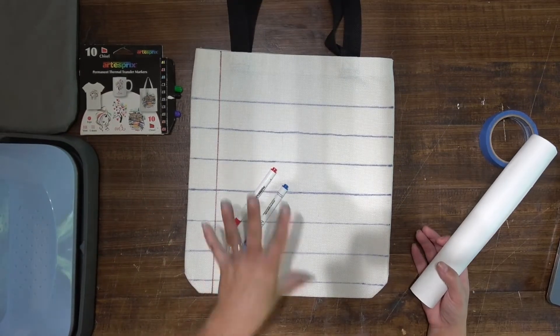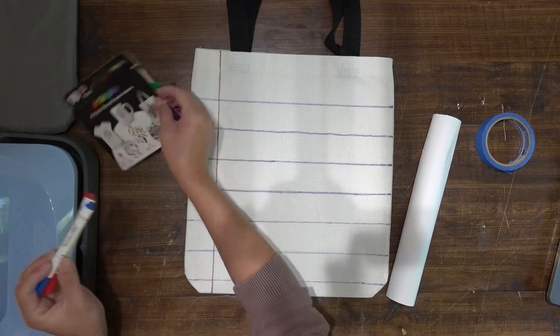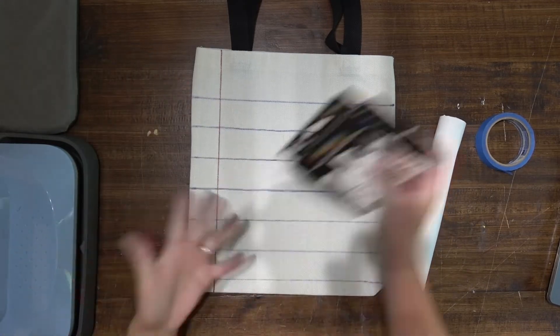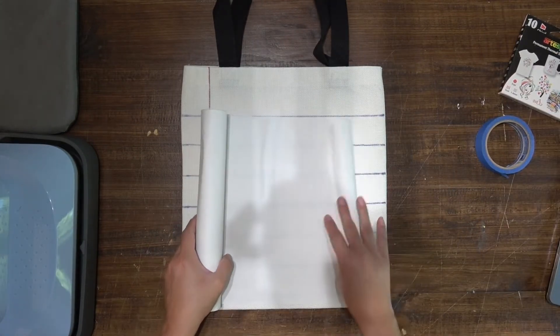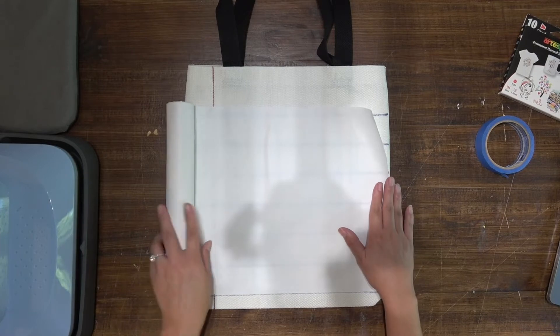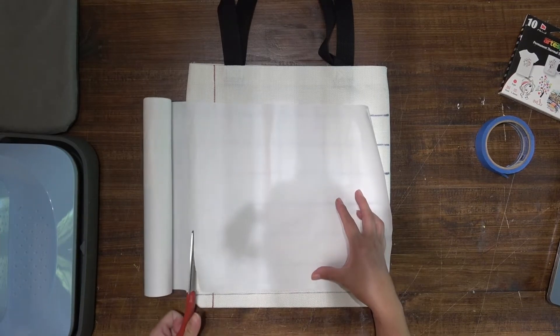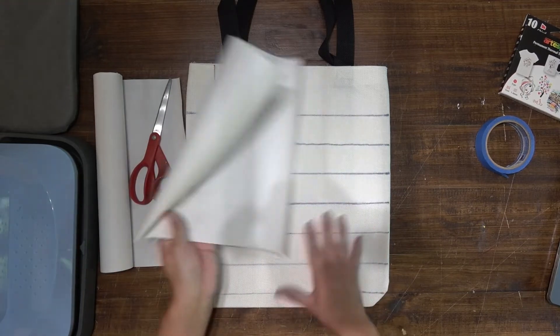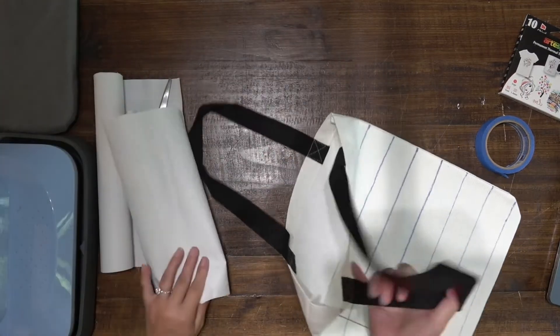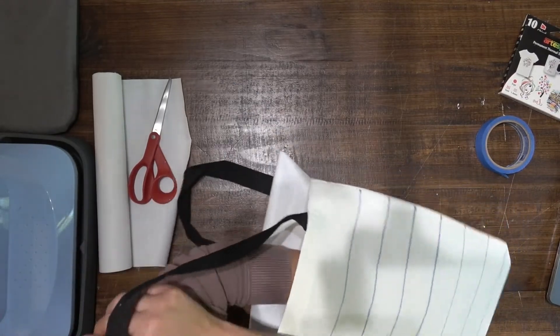Okay. So because I just used these markers directly onto the tote, I don't need any type of heat transfer tape because there's nothing to glue on there or to tape on there. I am just going to use some butcher paper, my scissors, and I'm going to trim out the size of the notebook or the tote.